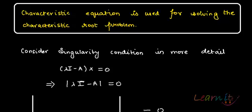Characteristic equation is essentially used for solving the characteristic problem. So in finding how do you find out these lambdas, you find them out by using the characteristic equation.